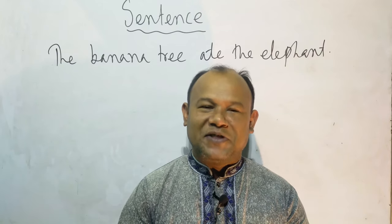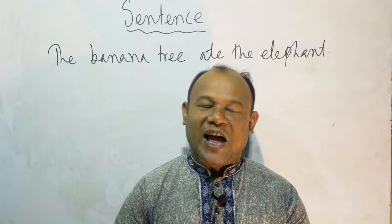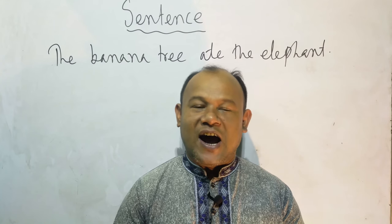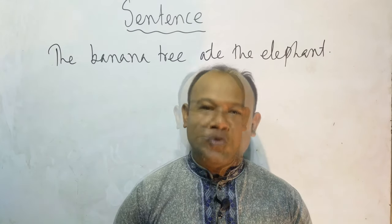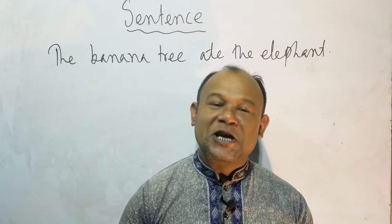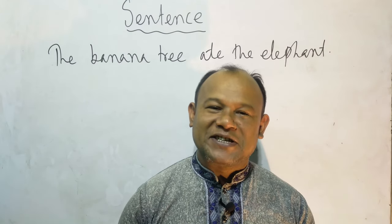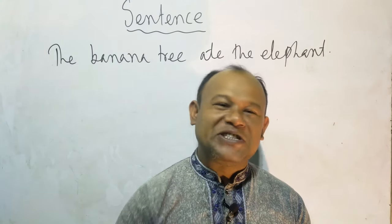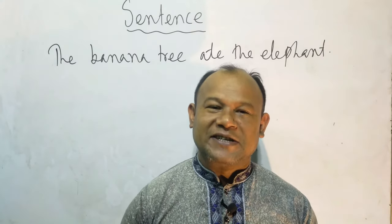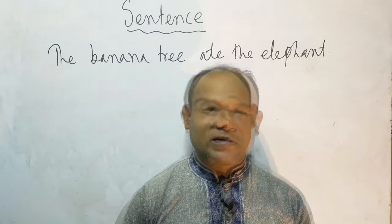In case of this sentence: 'The banana tree ate the elephant.' Do you want to say that it is a sentence? If you want to say that it is a sentence, what is your logic behind your opinion? But if you don't want to say that it is a sentence, so what is your logic behind your opinion?